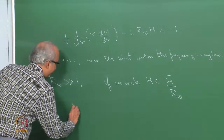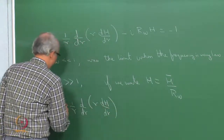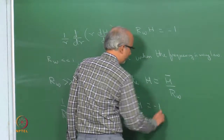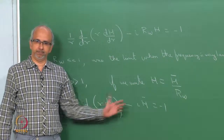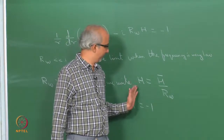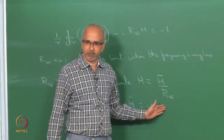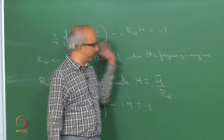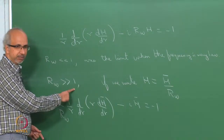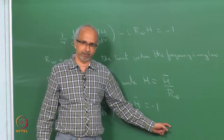When I substitute H = H̄/Rω into the equation, I get a factor of 1/Rω multiplying the viscous term, so I get: minus i H̄ equals minus 1. In the limit of Rω much greater than 1, that viscous term is now zero — I can knock it off — and I have a balance between the inertial term and the pressure term.